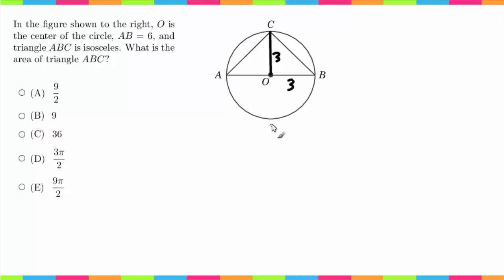So now if we're looking for the area of triangle ABC, the area of a triangle is equal to one half the base times the height. Now we know that the base, which is from here to here